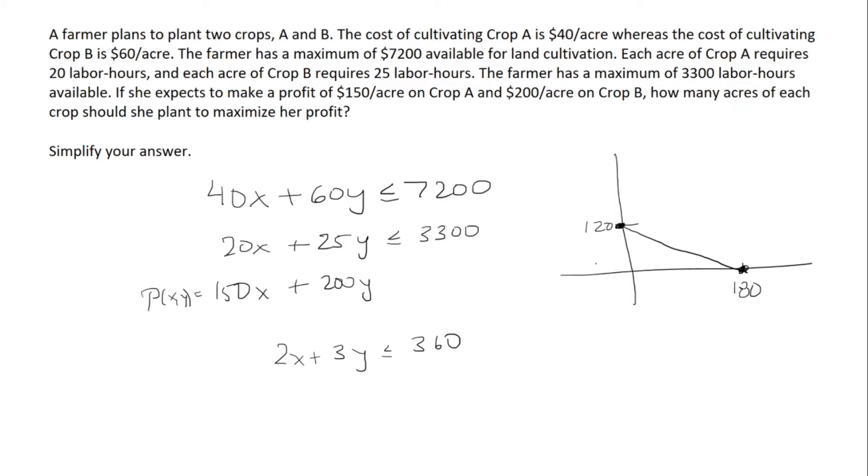I'm only looking at the first quadrant because it doesn't make sense to have negative x or y, so x and y should be greater than or equal to 0. We're looking for 2x plus 3y less than or equal to 360. We can plug in x and y equal to 0 and see that 0 is less than or equal to 360, so that means we want to include the origin, which is this way.